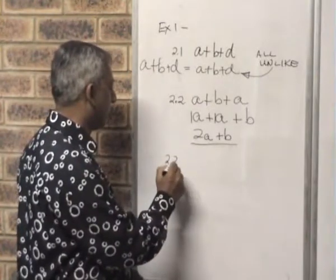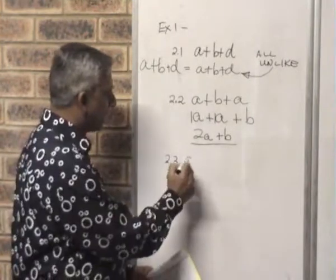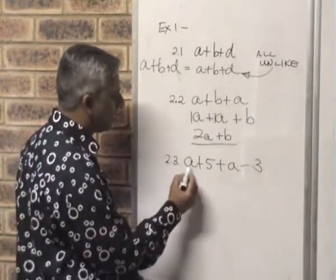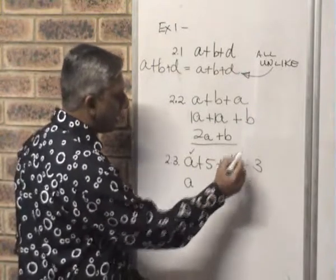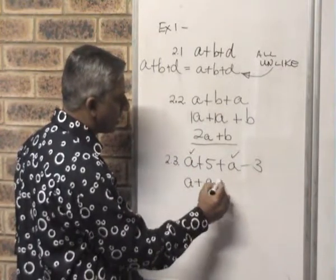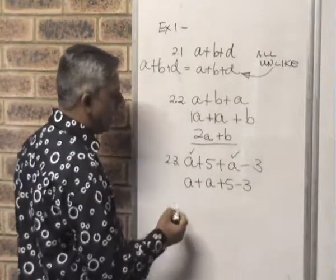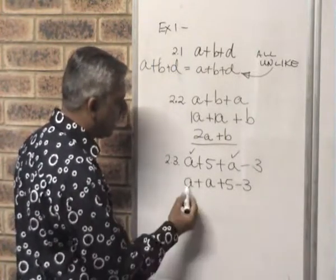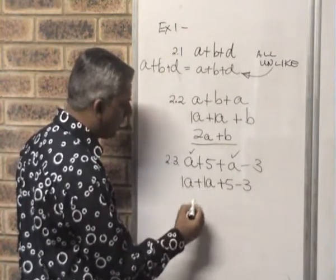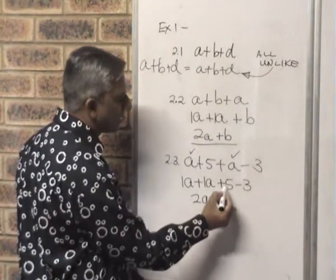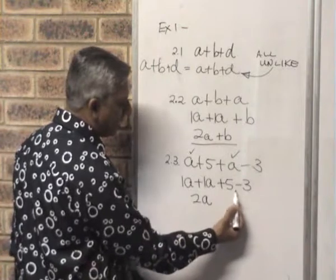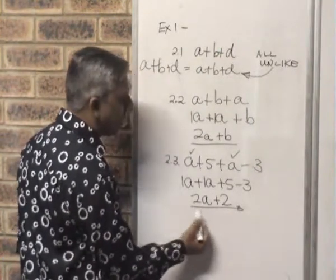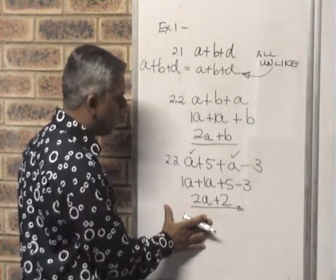Moving on to 2.3. In 2.3 you've got A plus 5 plus A minus 3. Firstly, group the like terms — so we group the A's together, then we have plus 5 and minus 3. A plus A: that's 1A and 1A, so 1 plus 1 gives me 2A. Plus 5 minus 3 — remember your integer rules: you have 5, you owe 3, you end up with 2. So these are now unlike terms and cannot be added anymore. This is where you stop.